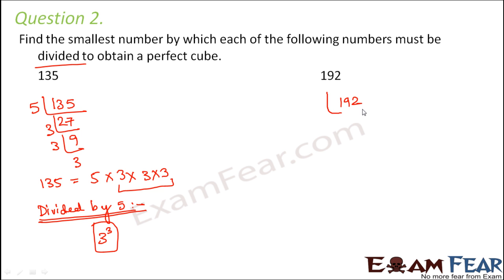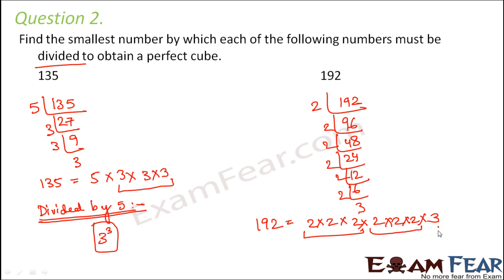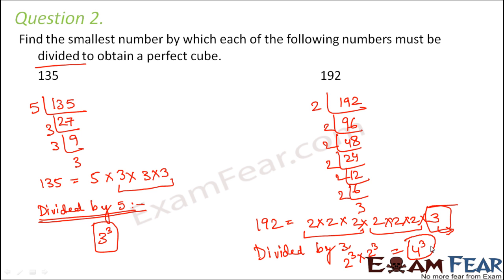For 192, using the same technique: 192 = 2 × 2 × 2 × 2 × 2 × 2 × 2 × 3. In groups of 3, 2 occurs 3 times, again 2 occurs 3 times, but 3 is left alone. So this number must be divided by 3 to get rid of the extra 3. Once the 3 is gone, we are left with 2 cubed into 2 cubed, which is equal to 4 cubed — a perfect cube.